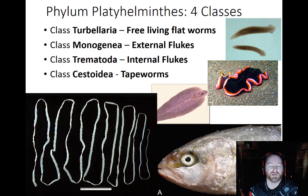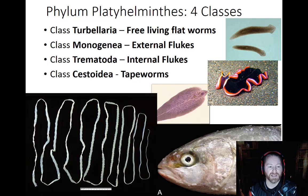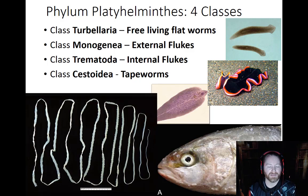We're going to talk about the different classes of the phylum Platyhelminthes. There are four big classes. We have class Turbellaria, which are free-living flatworms — non-parasitic. The rest are all parasitic: we have Monogenians, which are external parasites, and Trematodes and Cestoidea, which are internal parasites. Trematodes are internal flukes and Cestoids are essentially tapeworms.